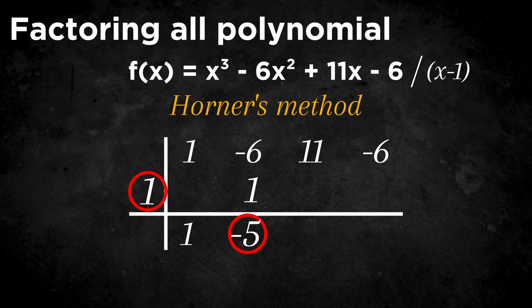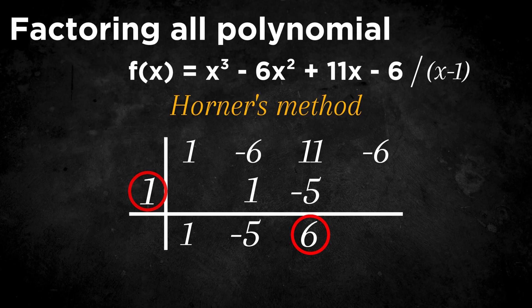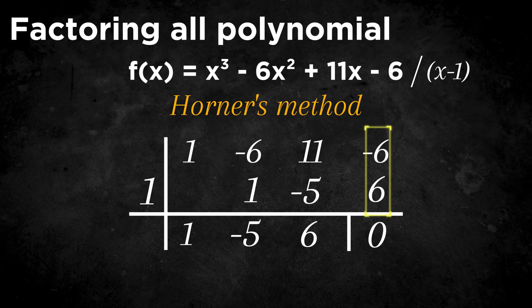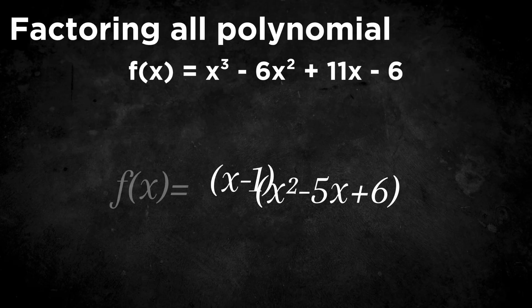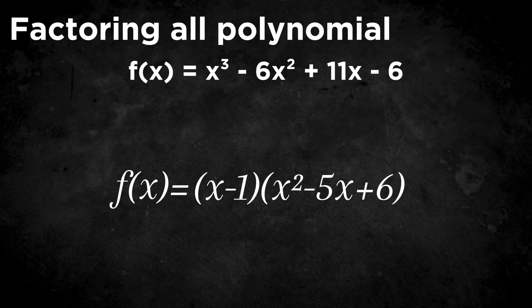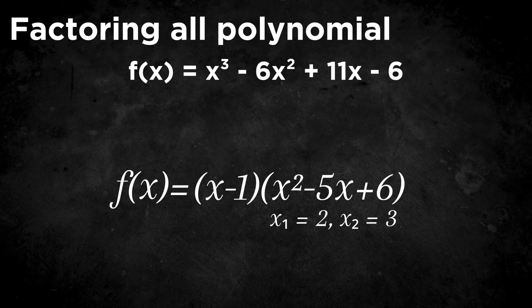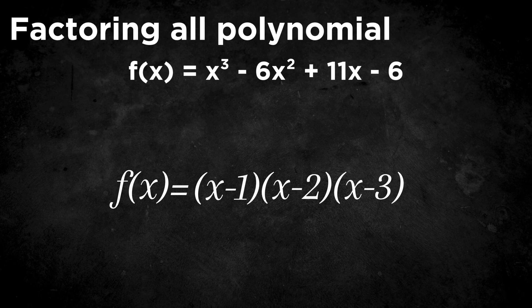Multiply minus 5 by 1 and place the result under 11. Add the two numbers together and we get 6. Do it one more time. At the end, you should get a remainder of 0 if you did it right, and this is our quotient. The 6 gets no x, minus 5 gets one x, and 1 gets two x's. So our function is equal to our divisor times our quotient. Now we are left with a quadratic equation and we simply use the quadratic formula to solve it. We get the two values 2 and 3. So the factored form of our original function is (x minus 1)(x minus 2)(x minus 3).